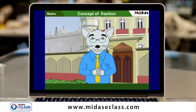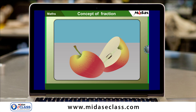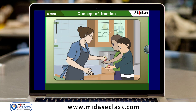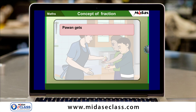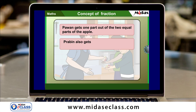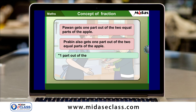Now look here carefully. Here we divided this apple into two equal parts. One part was given to Pawan and the other part was given to Prabin. So we can say that Pawan gets one part out of the two equal parts of the apple, and Prabin also gets one part out of the two equal parts. We can represent one part out of two equal parts, or one out of two, as one upon two in mathematics.